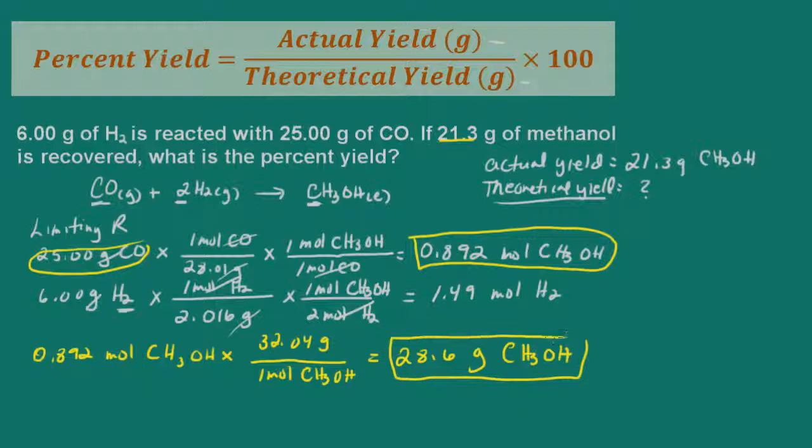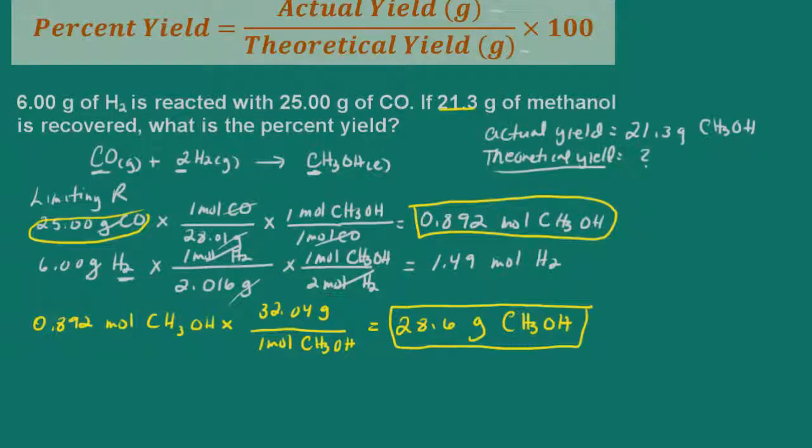So now, we want to go ahead and determine our percent yield. And again, according to the equation there, our percent yield is given by the actual yield, which is 21.3 grams, divided by our theoretical yield, which is right here. That's 28.6 grams, times 100. And we get 74.5 percent.